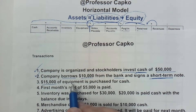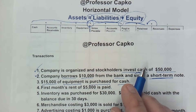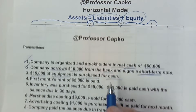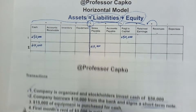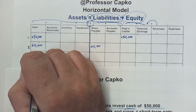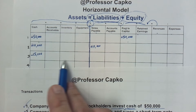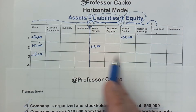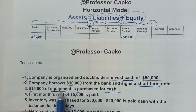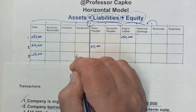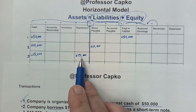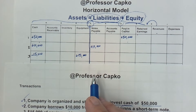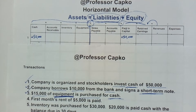Transaction three: $15,000 of equipment is purchased for cash. Cash is going down by $15,000 because they're paying cash for something, so we subtract $15,000 from the cash account. But we add to the equipment account, also an asset, by $15,000 because that's the equipment we bought. We're exchanging one asset for another — $15,000 reduced cash, equipment went up $15,000 — row three remains in balance.